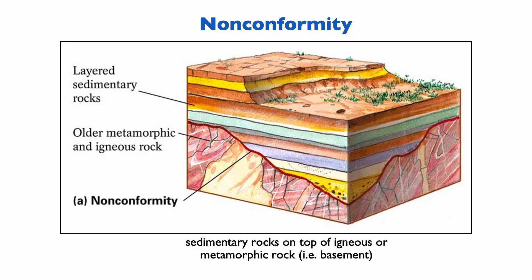For this we will use the stratigraphic record of the Grand Canyon. The first unconformity type is the nonconformity. A nonconformity is when sedimentary rocks are in contact with basement rock, and by definition, when that happens, there is a time gap — so we are dealing with a nonconformity.